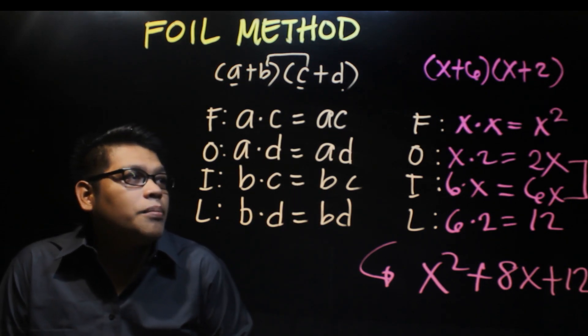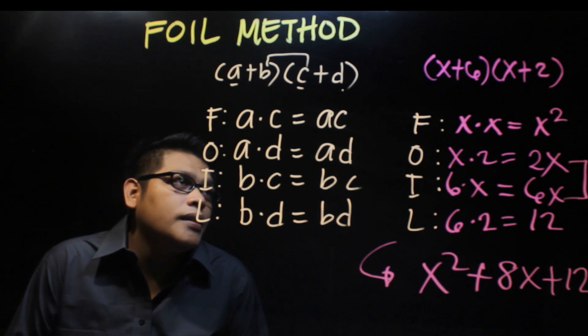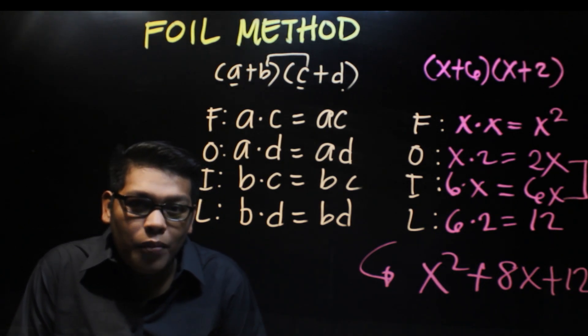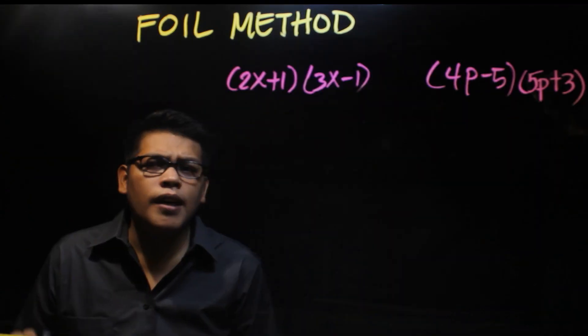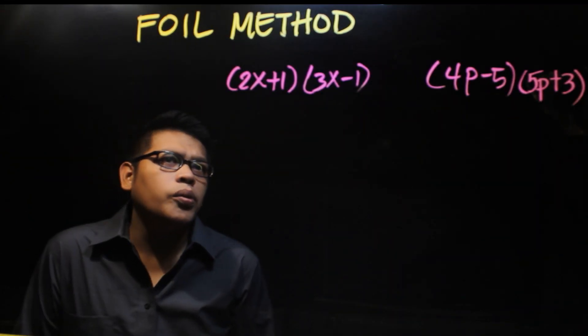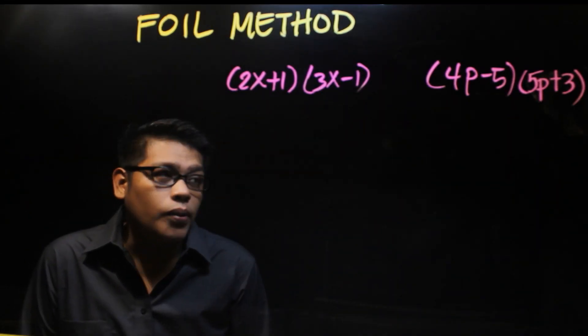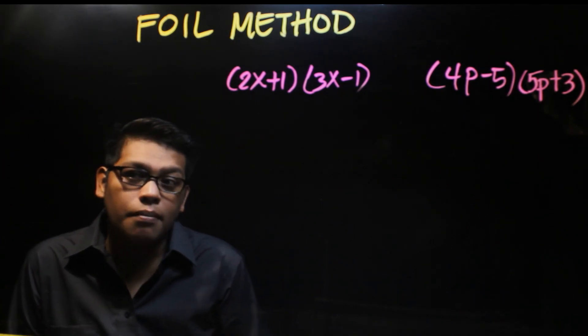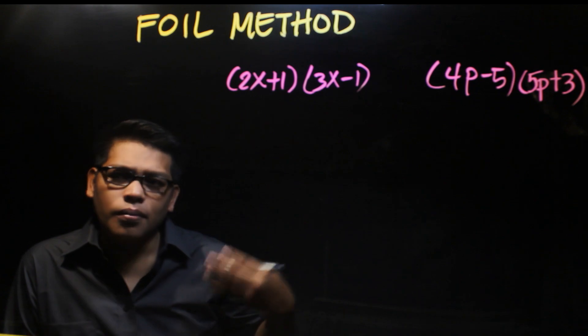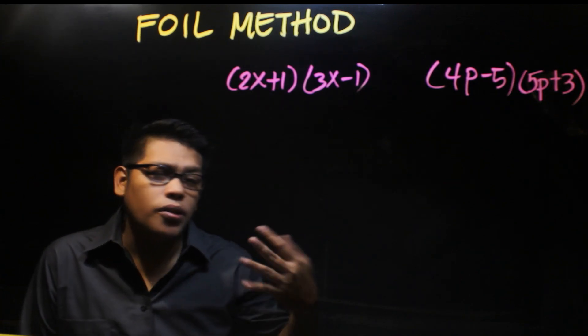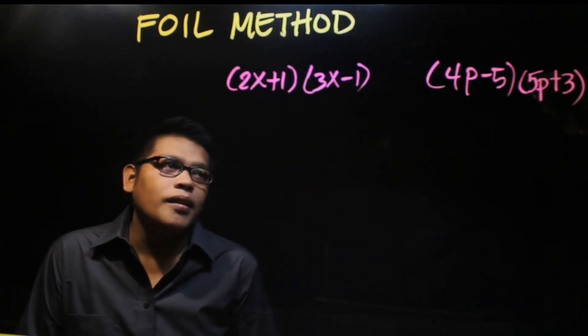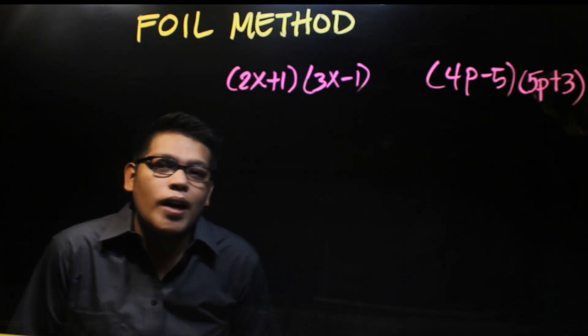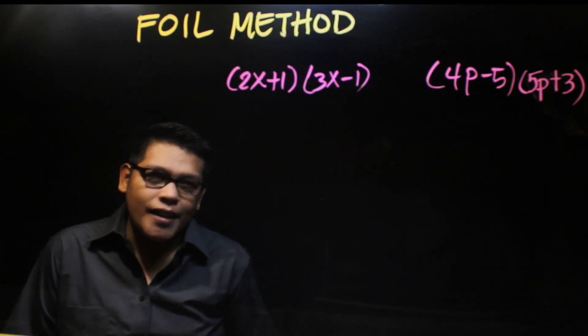For another example, we have (2x+1) times (3x-1) and (4p-5) times (5p+3). Feel free to pause the video and answer it yourself so we can see if you understand today's topic.